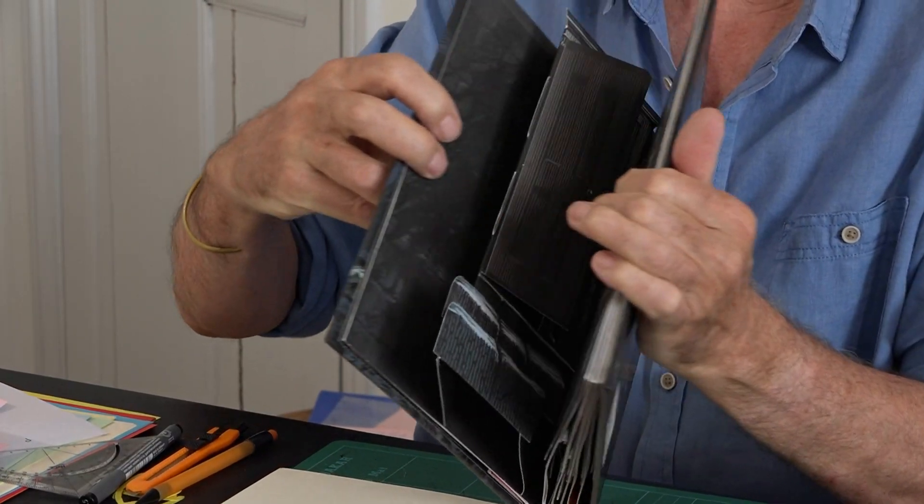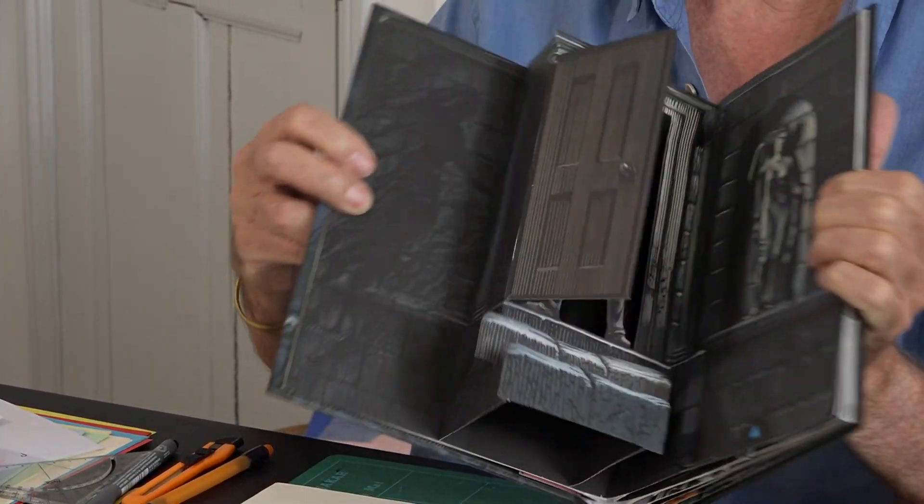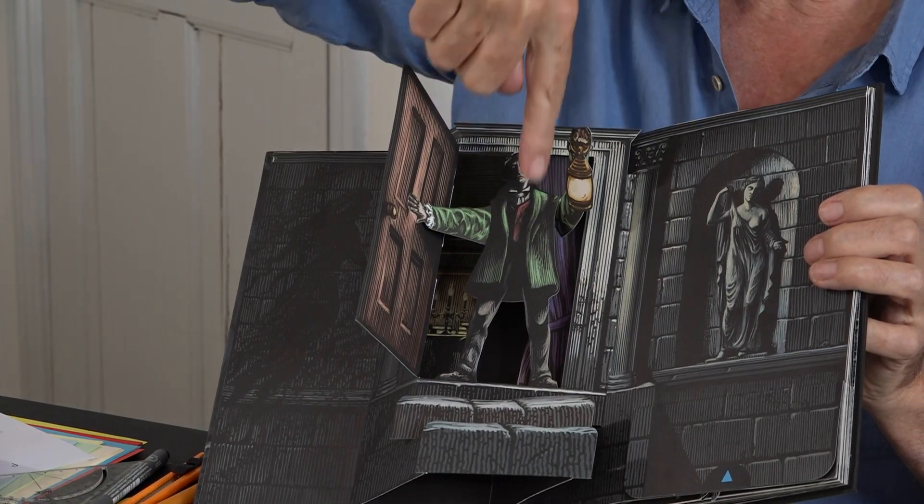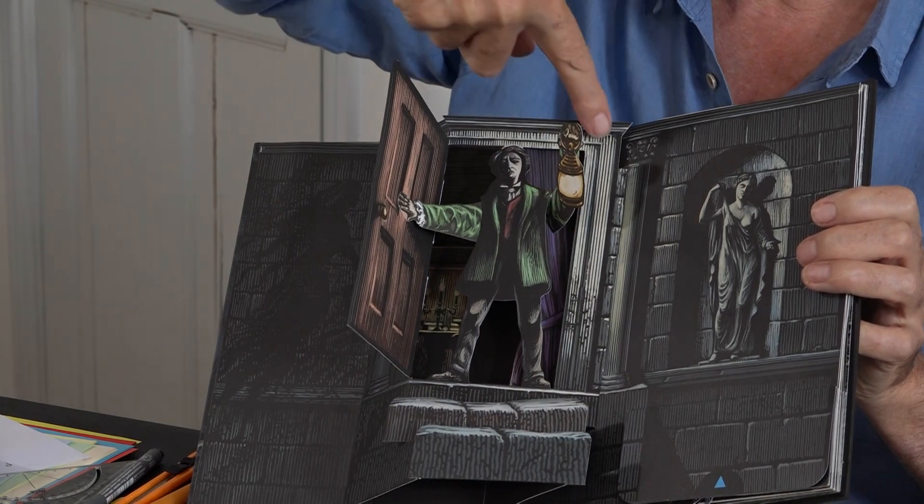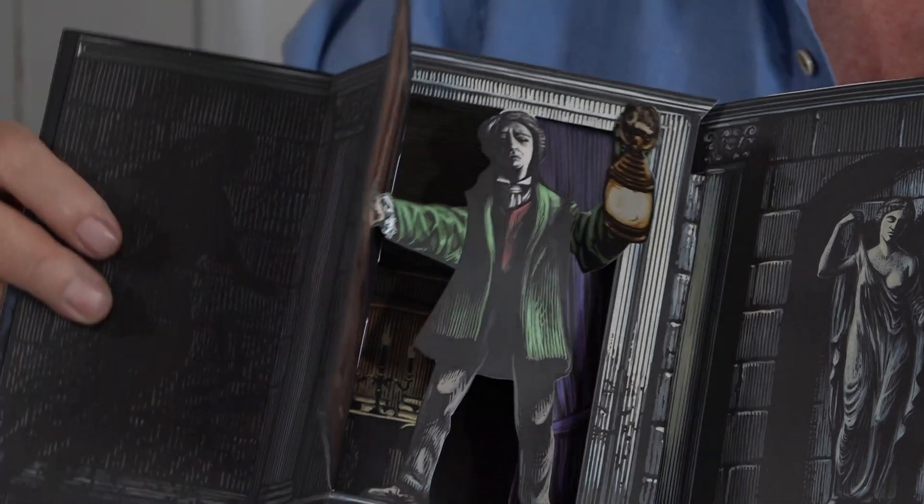As you open the spread, the door opens and it's all moved by this strut. This arm is actually a strut that goes right through the doorway, behind the figure, behind the curtain, and attaches to the base. Looking at it, the curtain is part of the strut that pushes the door open.